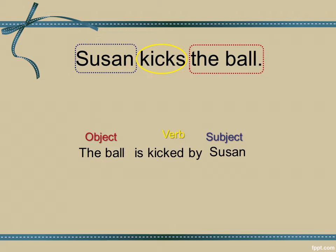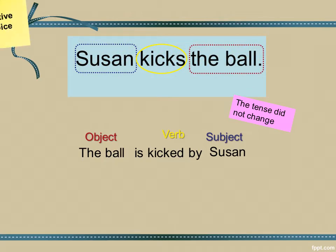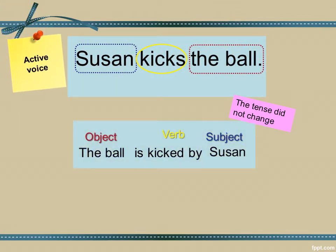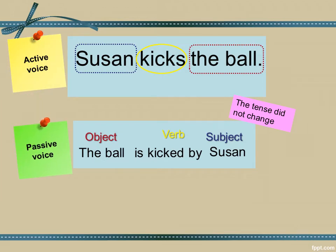Though we take the past participle, it does not mean that the sentence has changed in tense — the tense remains the same. The first sentence is in active voice while the second sentence is in passive voice.